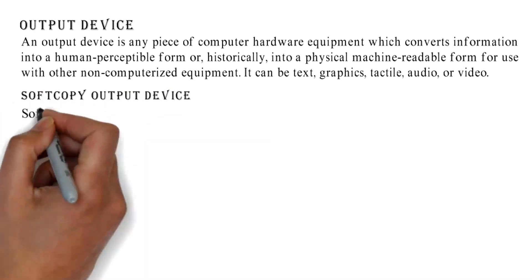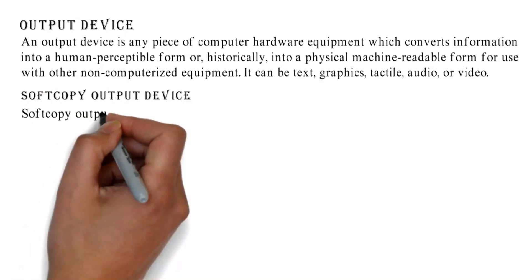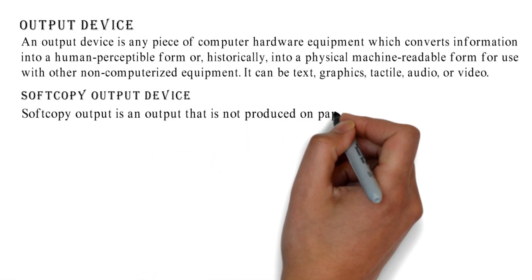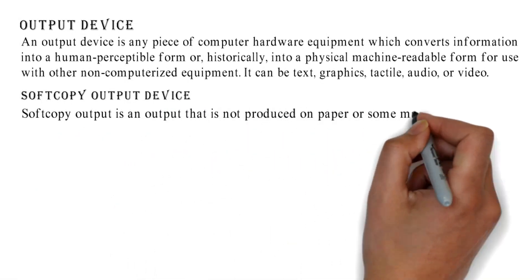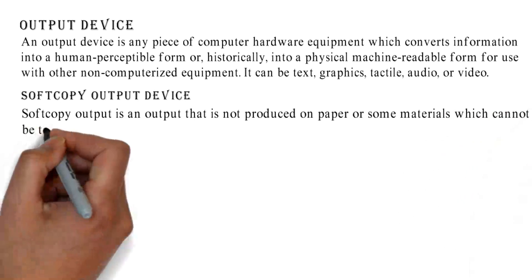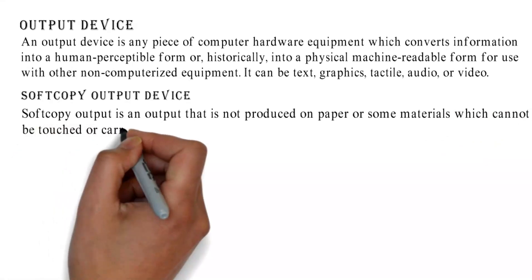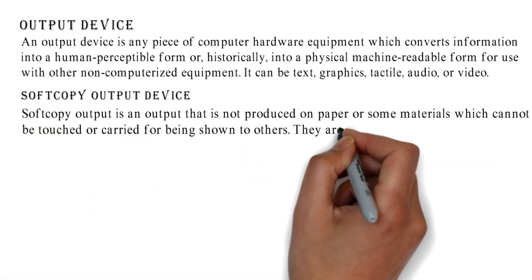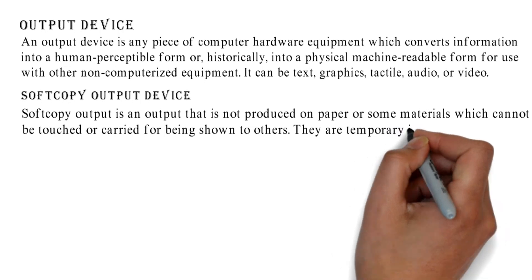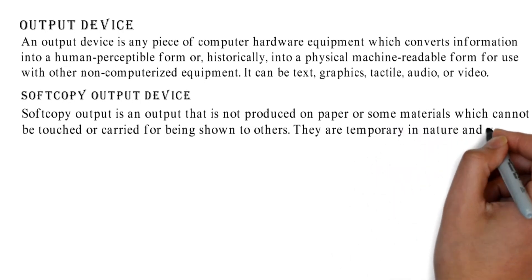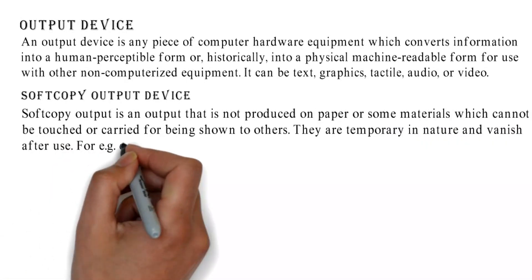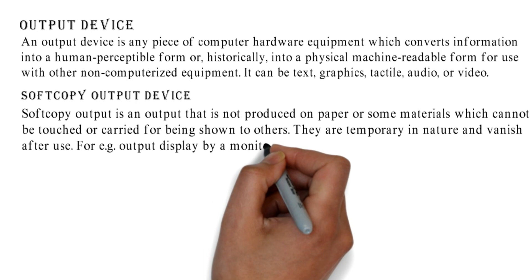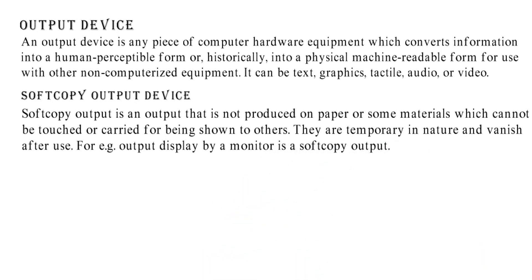Soft Copy Output Device. Soft copy output is an output that is not produced on paper or some material which cannot be touched or carried for being shown to others. They are temporary in nature and vanish after use. For example, output displayed by a monitor is a soft copy output.